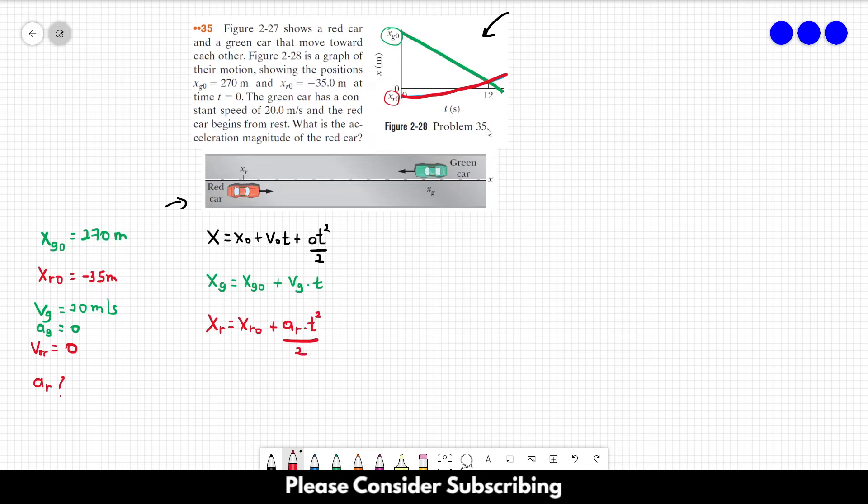Let's use the information that this graph brings to us. It says that when T equals 12 seconds, XG, the position of the green card, is the same as the position of the red card. This is the information that this graph shows us.